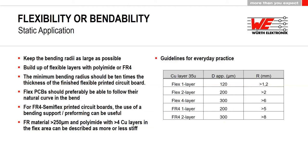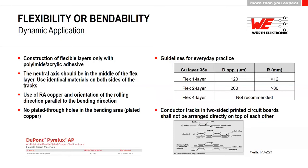For dynamic applications, flexible layers are built with polyamide and acrylic adhesive — polyamide copper with coverlay using acrylic adhesive to protect the copper. The neutral axis should always be in the middle of the flex layer, using identical materials on both sides of the traces. Always use rolled annealed copper with the rolling direction parallel to the bending direction. Never use plated through holes in bending areas for dynamic applications.